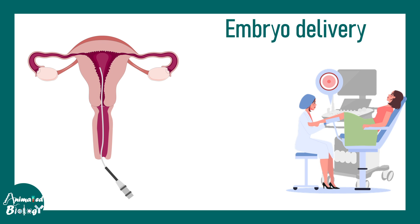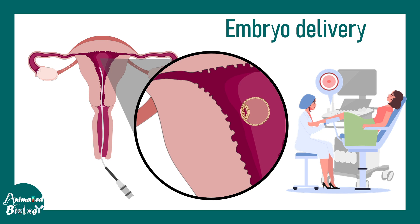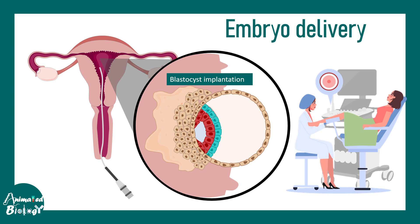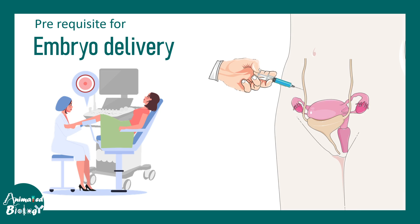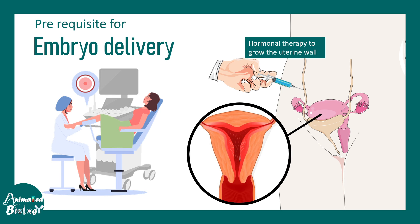The embryo is then delivered using a catheter through the vagina into the uterus, where the blastocyst should implant into the uterine wall. There is a prerequisite to this step: it must be ensured that the uterus can support the developmental stages that happen normally. To ensure the uterine wall is thick enough to support implantation, specific injections are provided that thicken up the endometrial lining, and a thick endometrial lining can support the implanted embryo.